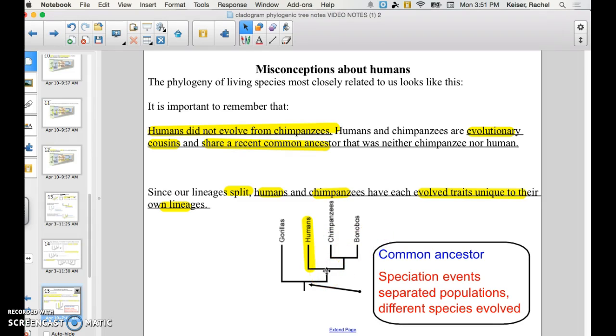And so it's incorrect to say we evolved from chimps. It is correct to say that we share a recent common ancestry. And there are certain fossil records that have shown evidence towards these speciation events.